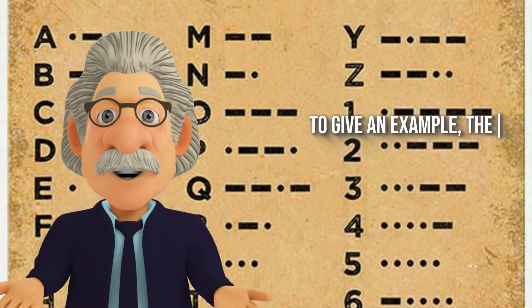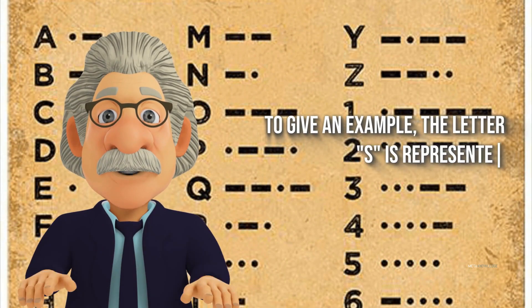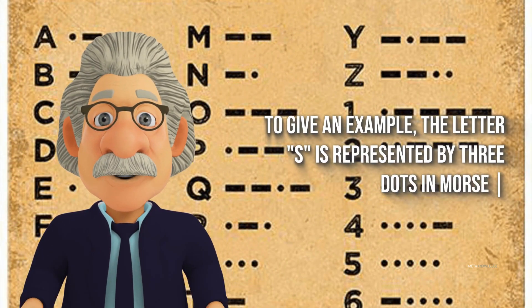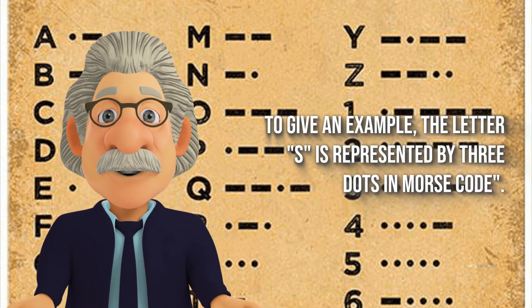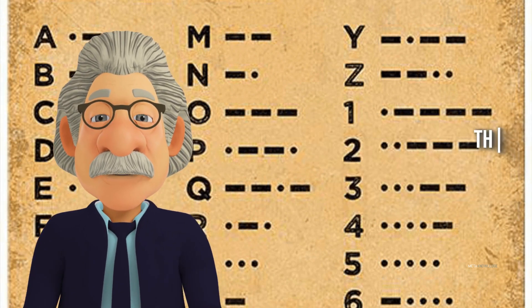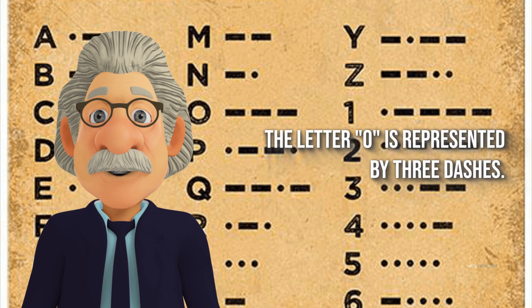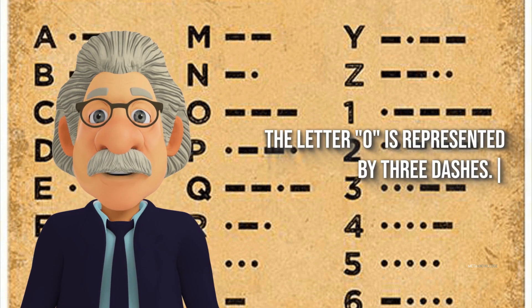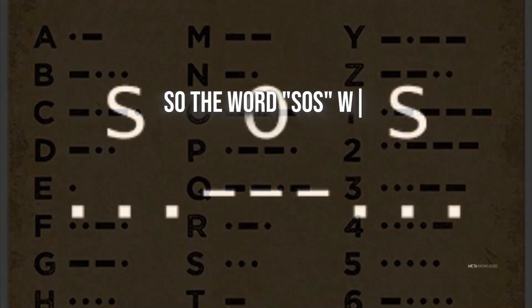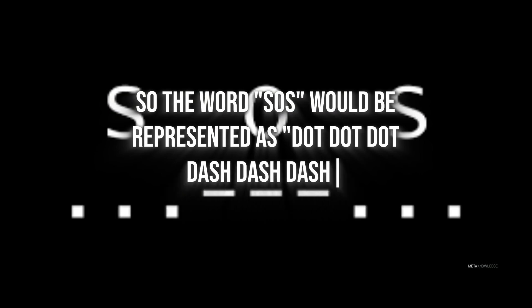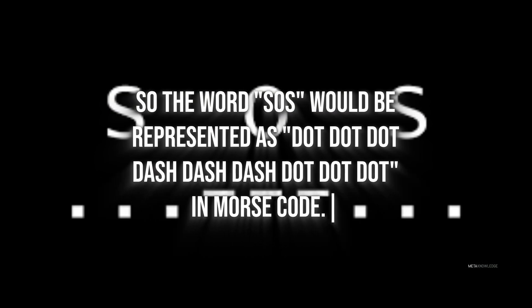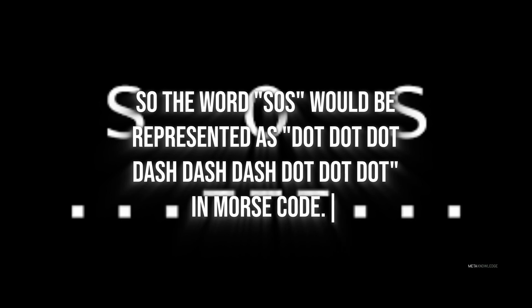To give an example, the letter S is represented by three dots in Morse code. The letter O is represented by three dashes. So the word SOS would be represented as dot dot dot dash dash dash dot dot dot in Morse code.